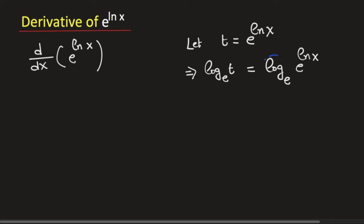We know that the logarithm of e with base e is equal to 1. So this implies that logarithm of t with base e is equal to ln x.